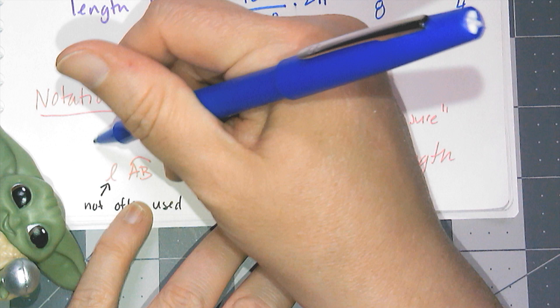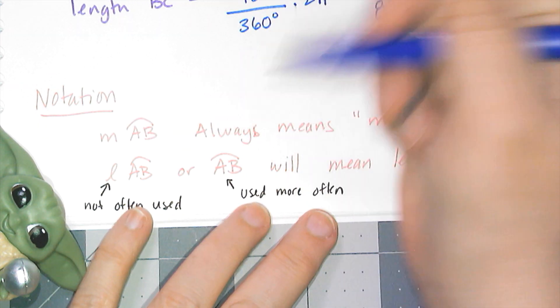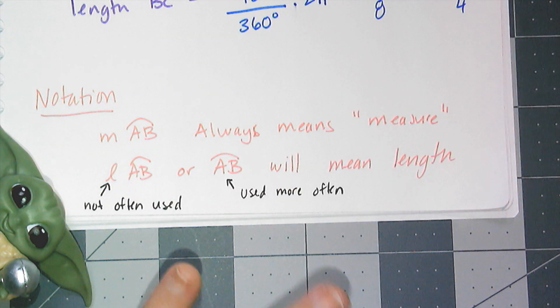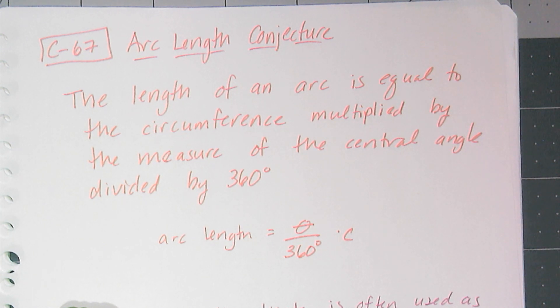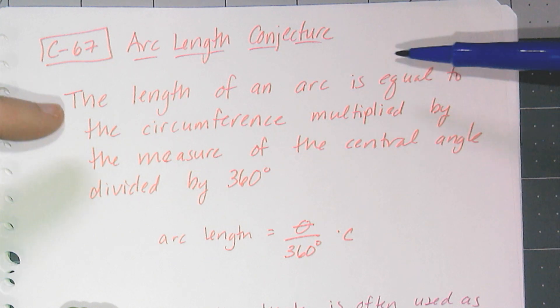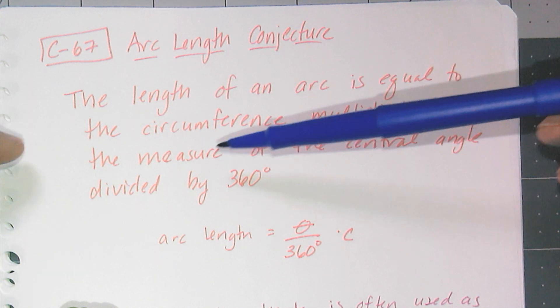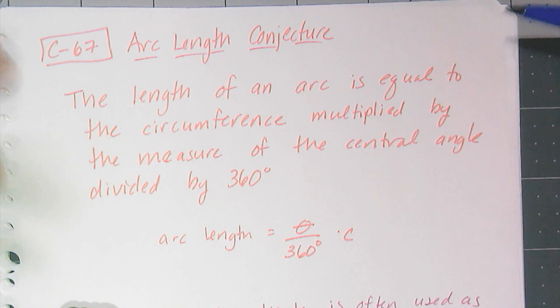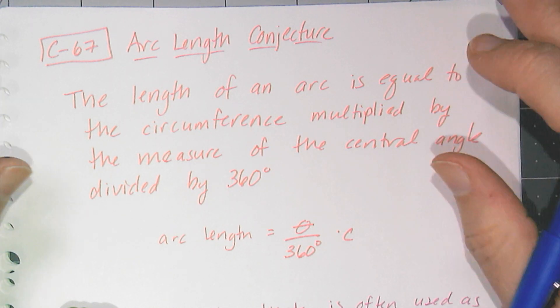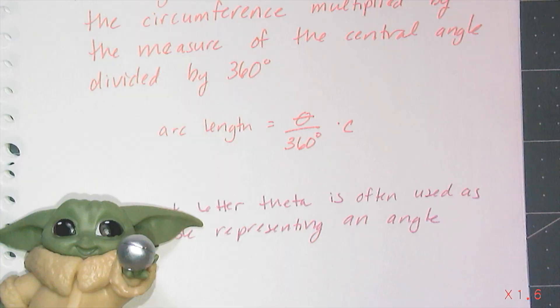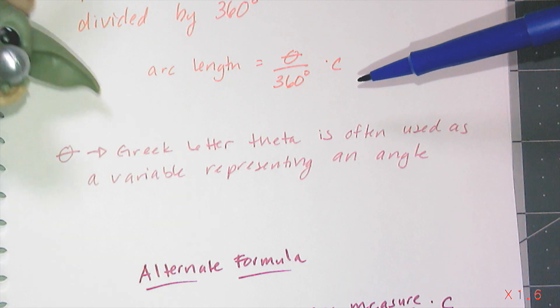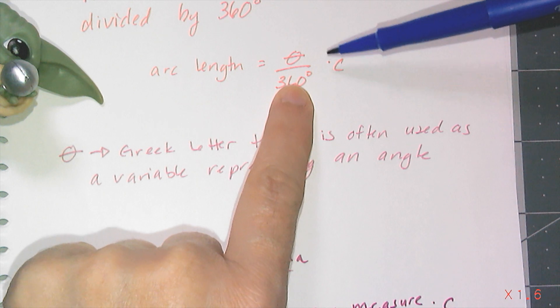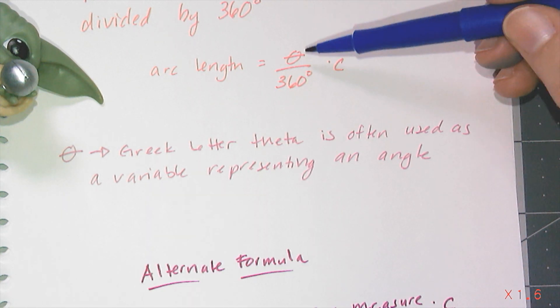Of course, we are going to end with the arc length conjecture, C67, that says: the length of an arc is equal to the circumference multiplied by the measure of the central angle divided by 360. That's just a fancy way of saying, 'find the fraction of the circumference that that arc is and then multiply that by circumference.' Now I did write down a formula for it—let's move Grogu out of the way here. So arc length equals—and it looks like a zero with a line through it over 360 times C. That zero with a line through it is the Greek letter theta.